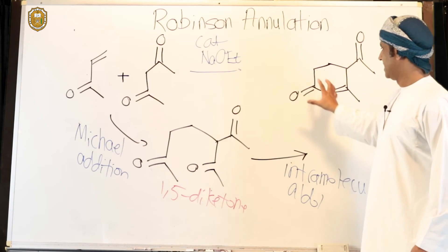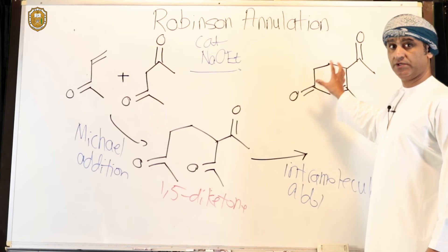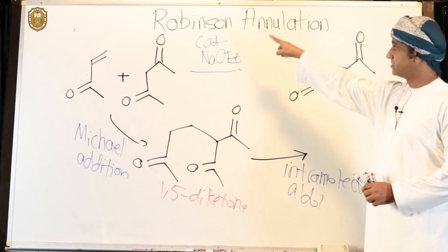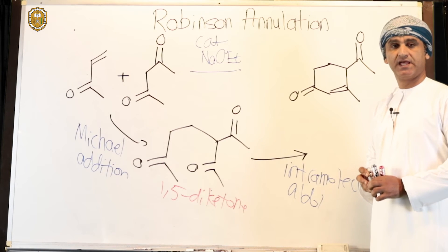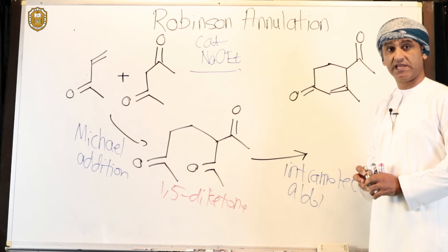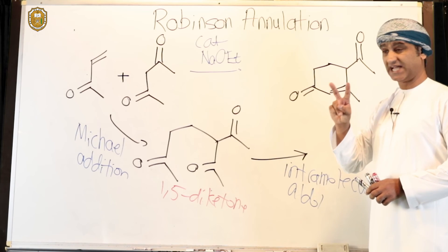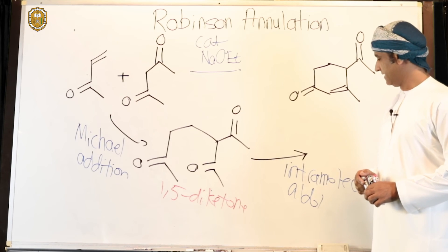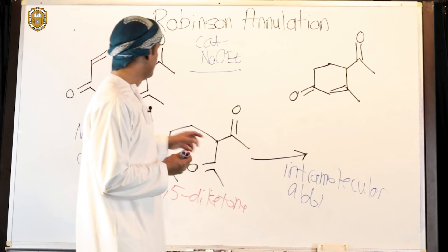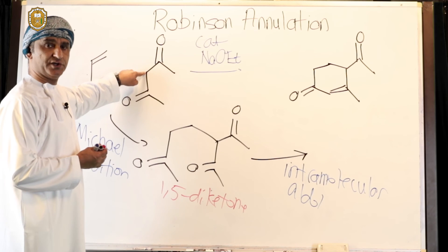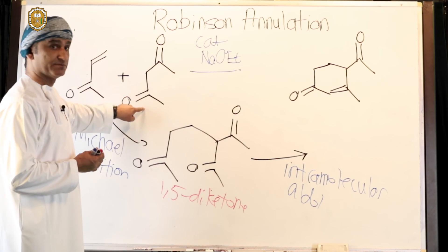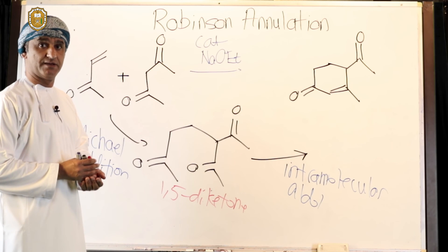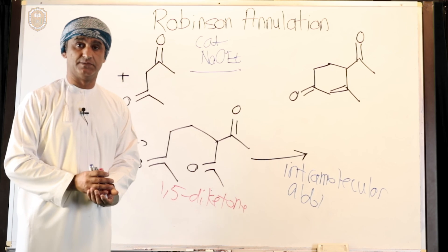The aldol reaction gives an enone — a cyclized product, a ring — and this overall reaction is called Robinson annulation. Robinson annulation therefore involves two reactions: Michael addition followed by intramolecular aldol reaction. The requirements are a hydrogen on the alpha position, a ketone, and an alpha-beta unsaturated carbonyl compound. We will take more examples very shortly.